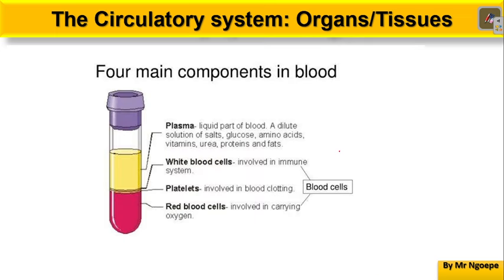Let's start with blood. We need to understand blood to understand your whole circulatory system. Starting with blood plasma: blood plasma is basically the liquid part of blood. It will contain substances such as glucose, amino acids, vitamins, urea, proteins, fats, and so forth.